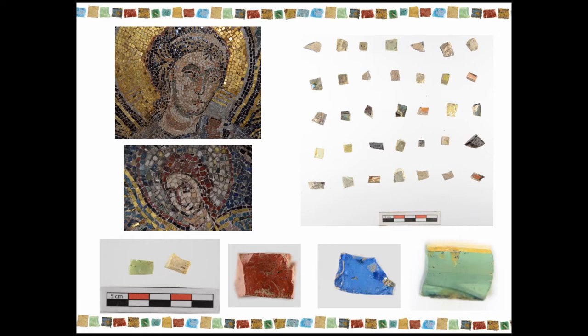They were made of opaque or translucent glass of various colors. You can have blue, red, green, like a wide range of colors, but you can also have a tesserae covered with metal foil, mainly gold, sometimes silver.